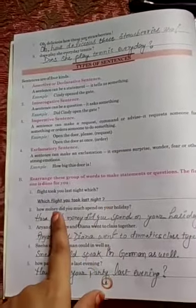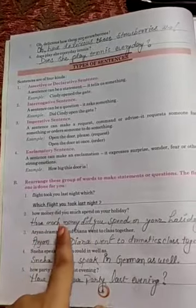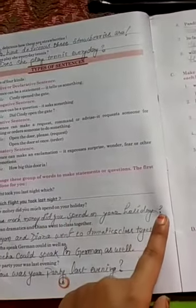Number 2 like this I will show you. How money did you much spend on your holidays? So the correct sequence will be how much money did you spend on your holiday? And a question mark.